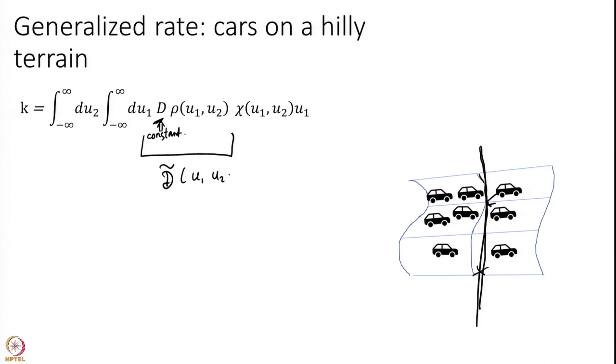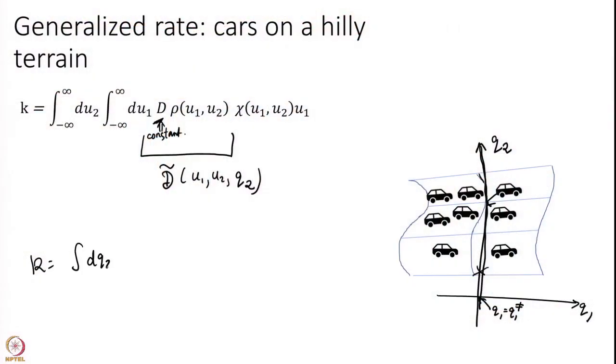Here you might have a less density, here you have more cars passing through. What we are going to do we are going to look at this d into rho and we will call this as d tilde which depends not only on u1 and u2 but also on coordinate q2. This I am calling as coordinate q2, this I am calling as coordinate q1. I am sitting at this point, let me call that as q1 equal to q1 dagger in transition state theory again linking to transition state theory where we use daggers. I am sitting at this q1 point at that mile marker and at that mile marker I am going across the road and finding the density at different points.